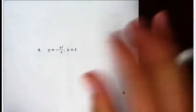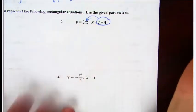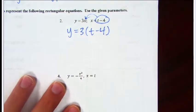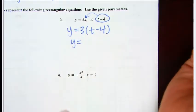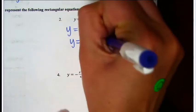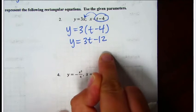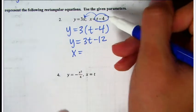For number two, the parametric x equals t minus 4, so I'm going to take that value for x and plug it in: y equals 3 times (t minus 4). We distribute that 3, giving us 3t minus 12 — that's our first parametric answer. Our answer for x is t minus 4, which is the one they gave you.